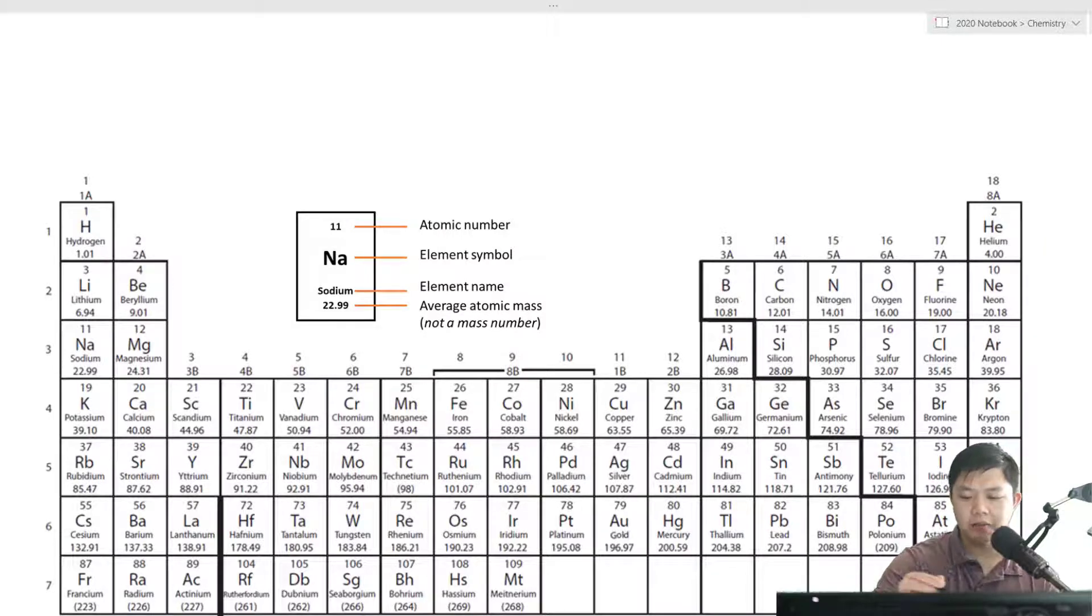So here we have the key. First of all, we have this number on top—that is your atomic number, and that number is the same as the number of protons. The number of protons are subatomic particles that make up an atom, and each atomic number represents a specific element.